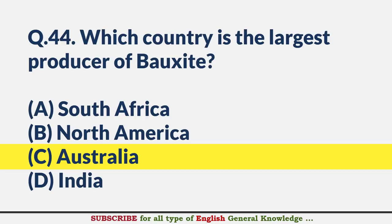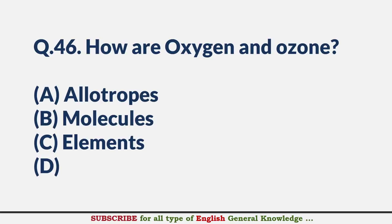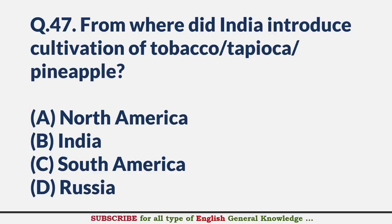Which Indian ruler was a contemporary of Akbar? — Answer A: Rani Durgavati. How are oxygen and ozone related? — Answer A: Allotropes. From where did India introduce cultivation of tobacco, tapioca, and pineapple? — Answer C: South America.